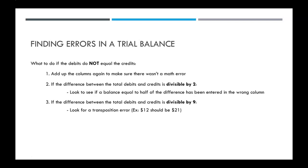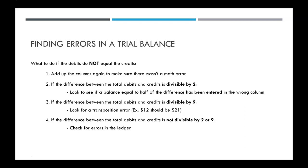If the difference between your debits and credits is divisible by nine, then we're going to look for a transposition error. And if the difference is not divisible by two or nine, and it wasn't just a math error, then you have to go back to your ledger to see if you made a mistake there.